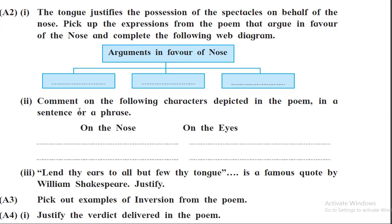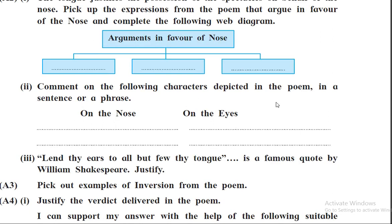Comment on the following characters depicted in the poem. On the nose: nose strongly puts his point to be the owner of the spectacle; he could present his case to the lawyer very convincingly so that the lawyer could confidently fight his case. On the other hand, eyes could not convince the lawyer to present his case and make him the winner. Eyes accepted whatever verdict was given by the judge.